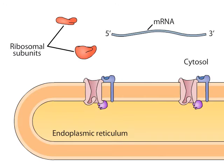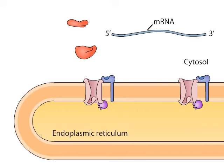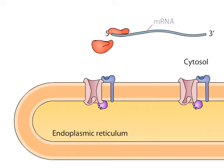All protein synthesis in eukaryotes begins in the cytosol, where ribosomal subunits come together and begin translating an mRNA near its 5' end.